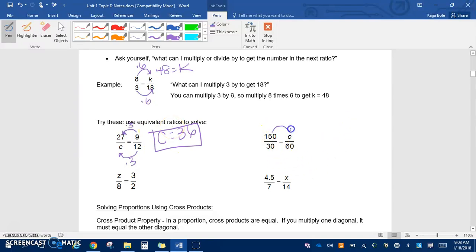Over here, we're going to draw our arrows to the right this time. How do we get from 30 to 60? We multiply by 2 on the top and on the bottom, so we get that c equals 300 here.